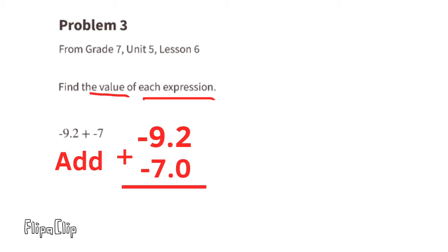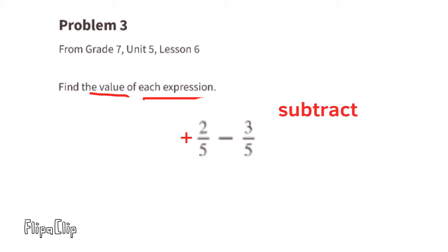Negative 9.2 plus negative 7 is like adding two groups of negatives, giving a total of negative 16.2. For positive two-fifths minus three-fifths: that's like having two-fifths to the right of zero on the number line and then moving three-fifths to the left, which takes us to negative one-fifth.